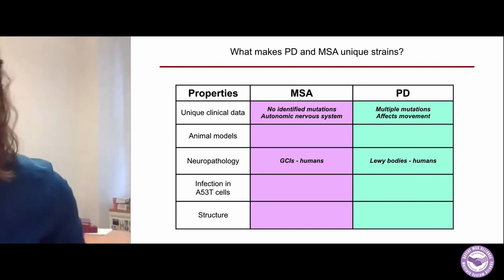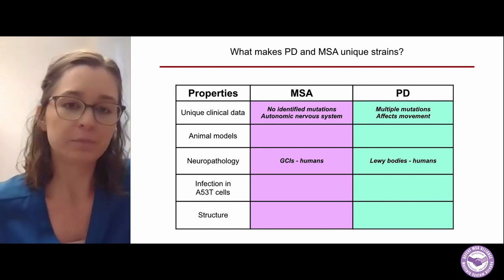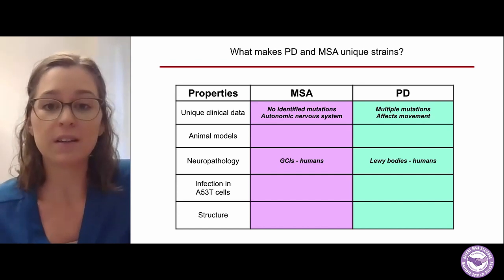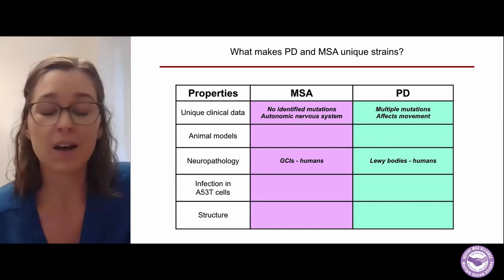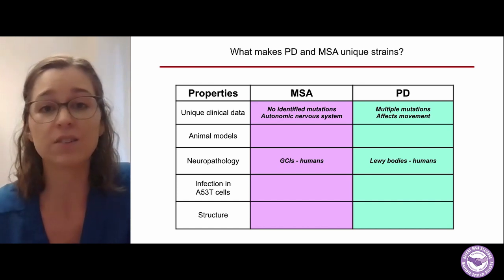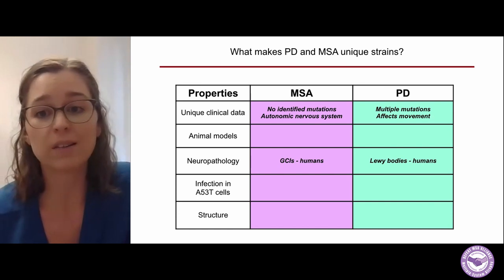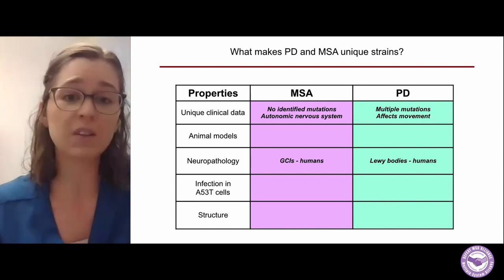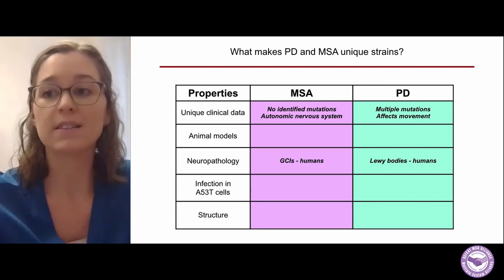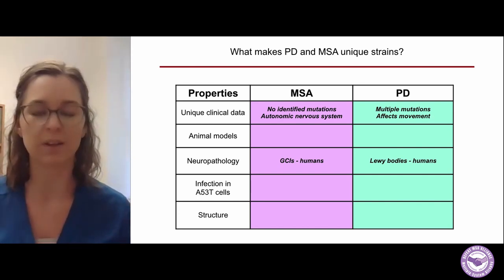So, what makes PD and MSA unique strains? There are a few properties listed in this table. Unique clinical data is the first set of properties: MSA has no identified mutations, while PD does. MSA attacks the autonomic nervous system, while PD primarily affects movement. We also have neuropathological data from patients — GCIs are the hallmark of MSA, whereas Lewy bodies are the hallmark of PD. I also have animal models, cell model infections, and the structure of the misfolded protein listed here, which are currently blank. Throughout this talk, I'll be presenting data to start filling in these blanks.